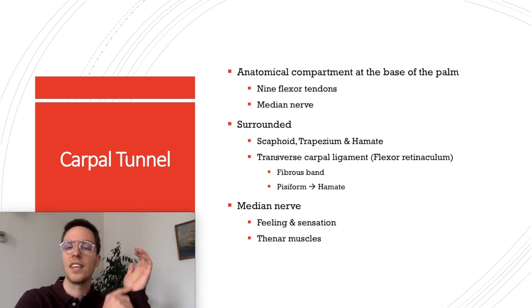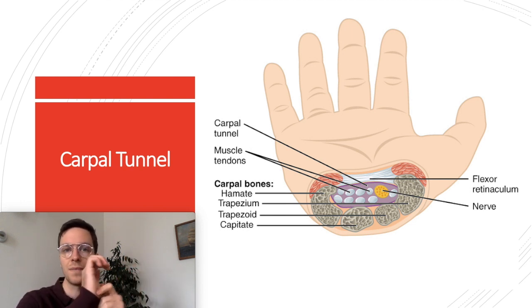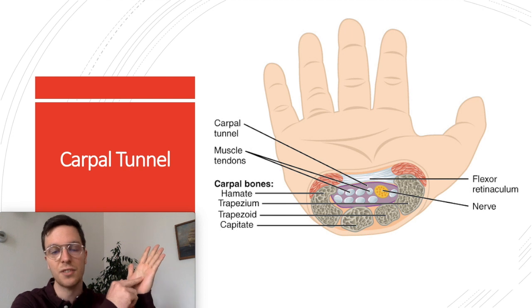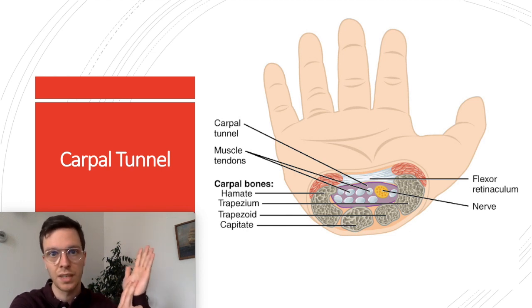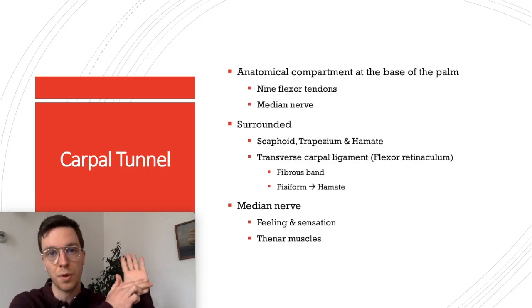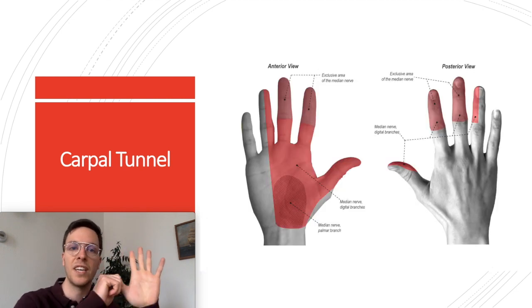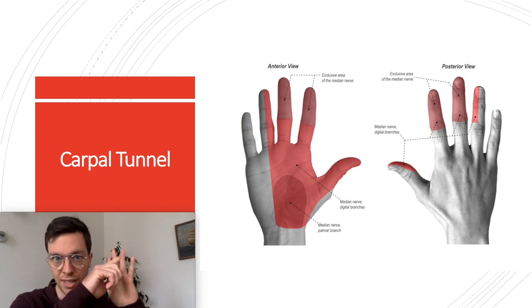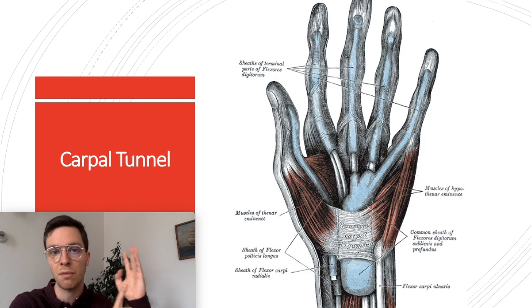The carpal tunnel itself is an anatomical compartment at the base of your palm, and in both hands you have a carpal tunnel. It consists of nine flexor tendons as well as the median nerve, and it's surrounded by several landmarks. The floor is made up by your carpal bones — the scaphoid, trapezium, and hamate — and the roof is made up by the transverse carpal ligament, also called the flexor retinaculum, a fibrous band that goes from your pisiform bone to your hamate. The most important structure in the carpal tunnel is your median nerve, because it innervates your thumb, index finger, middle finger, and the radial side of your ring finger, providing both sensation and motor innervation to the thenar muscles of your hand.